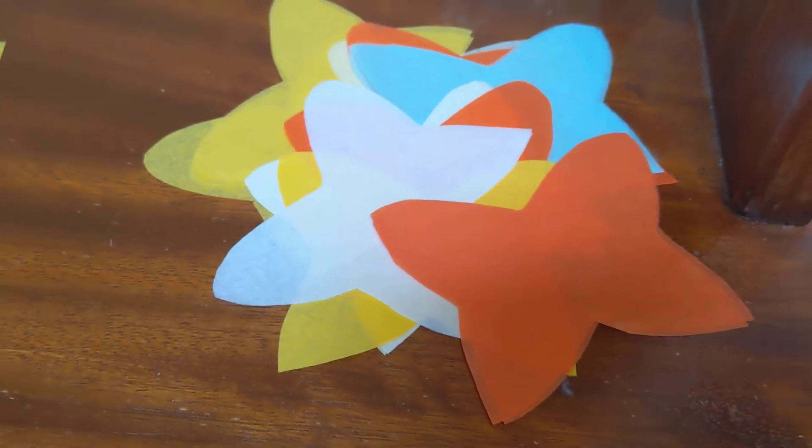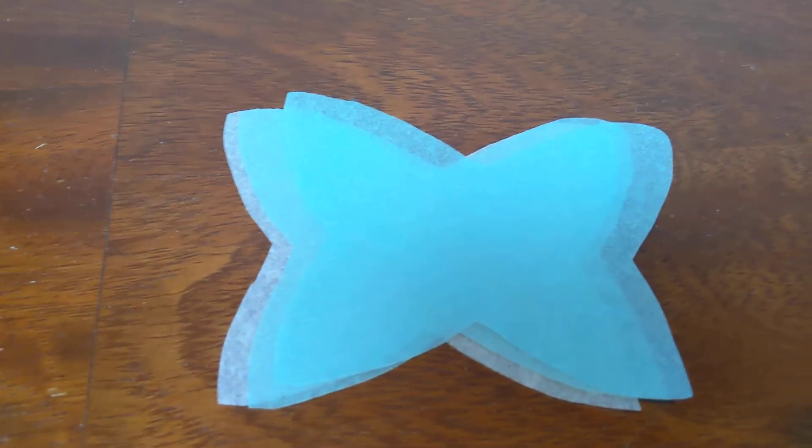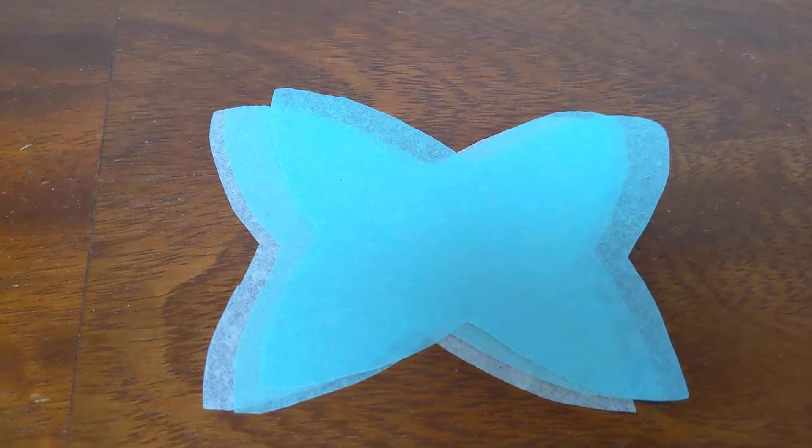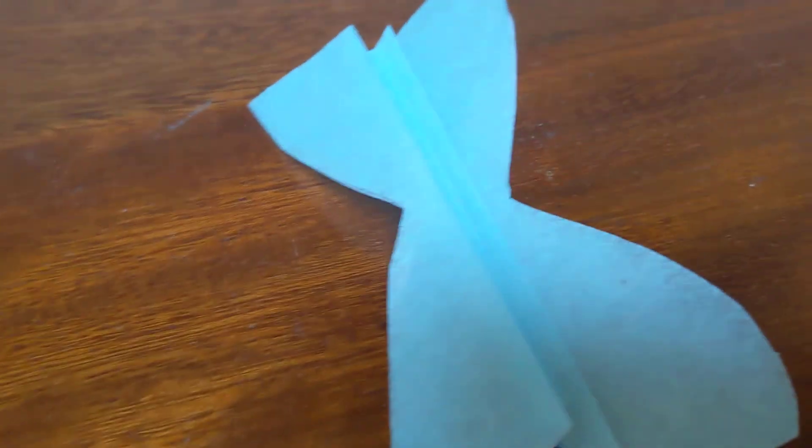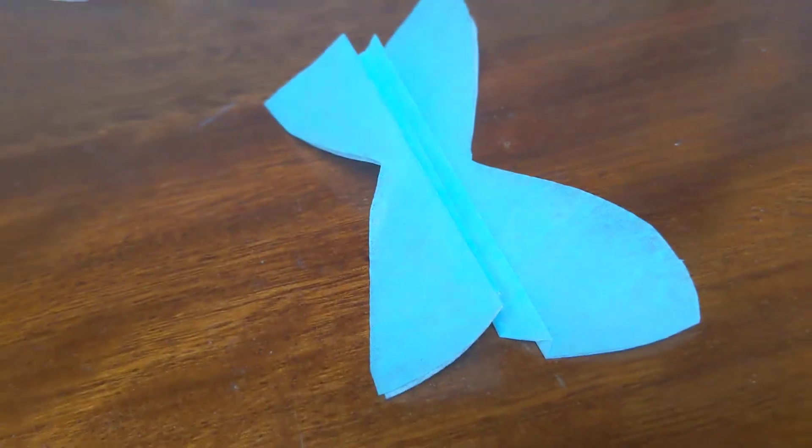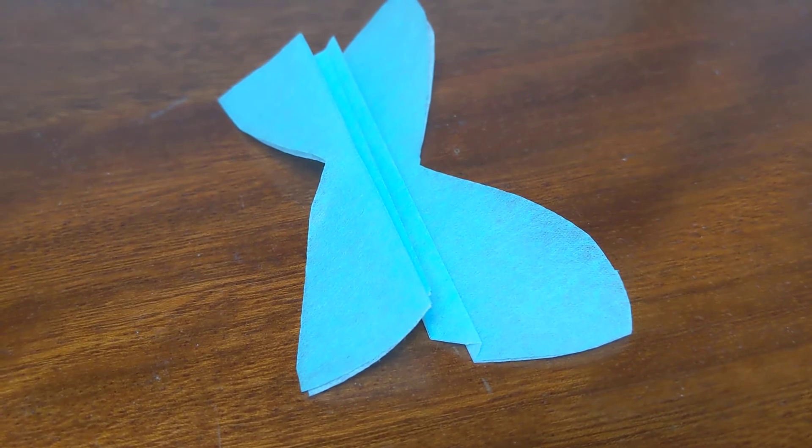From there you have lots of different butterfly shapes. Then you choose just two colors. Here we've got a blue and a white. And then you do in the middle some folds, maybe five or six folds.